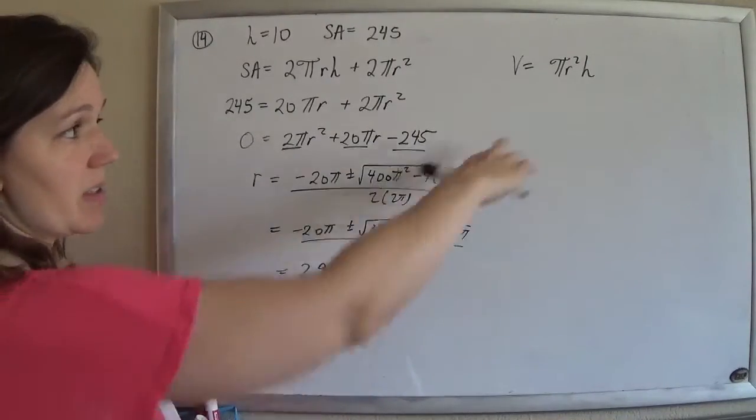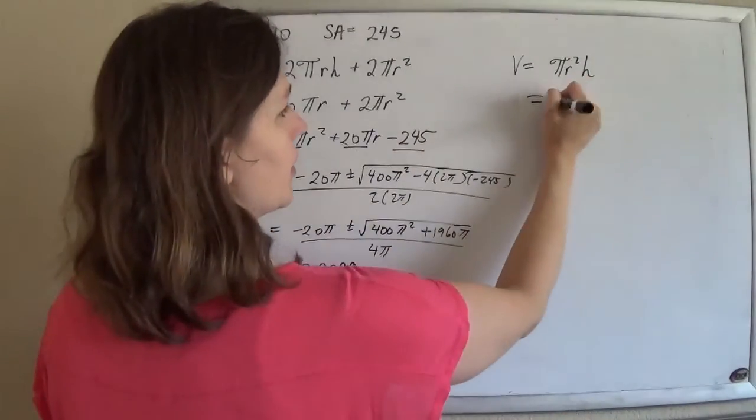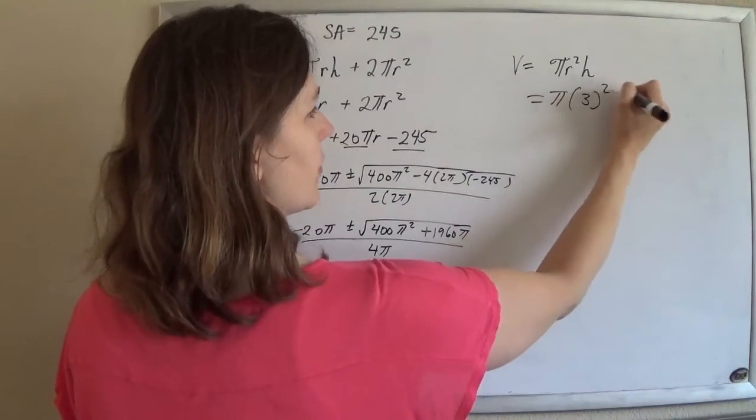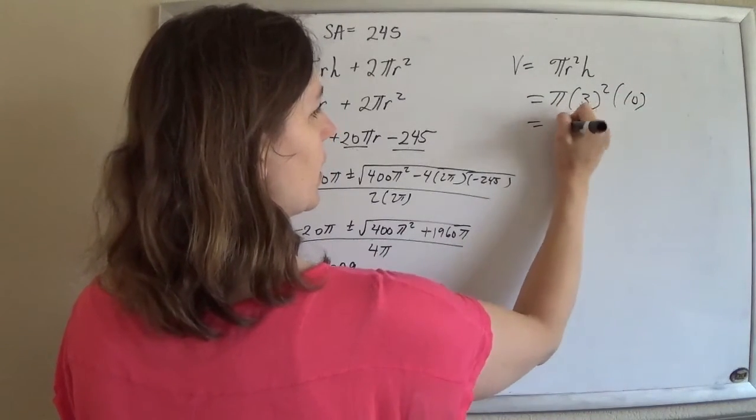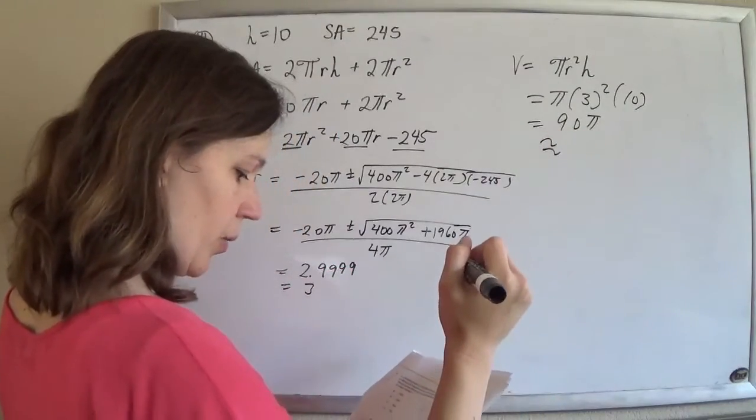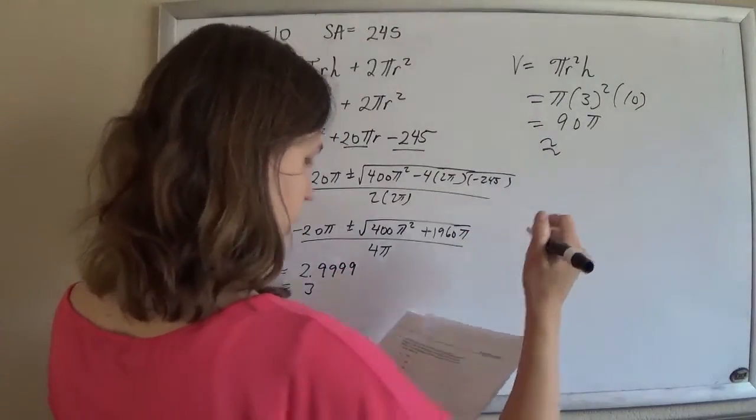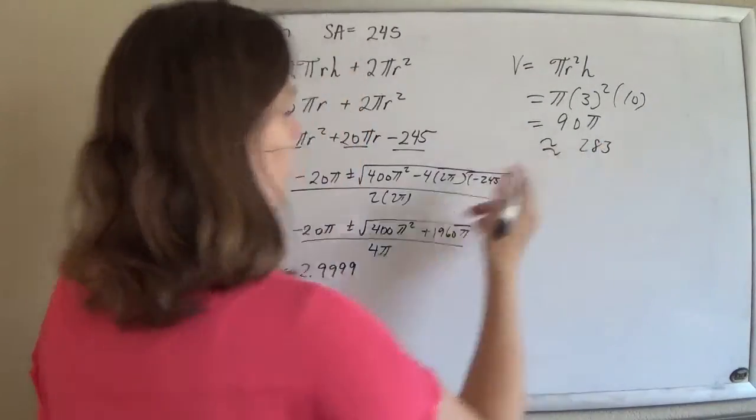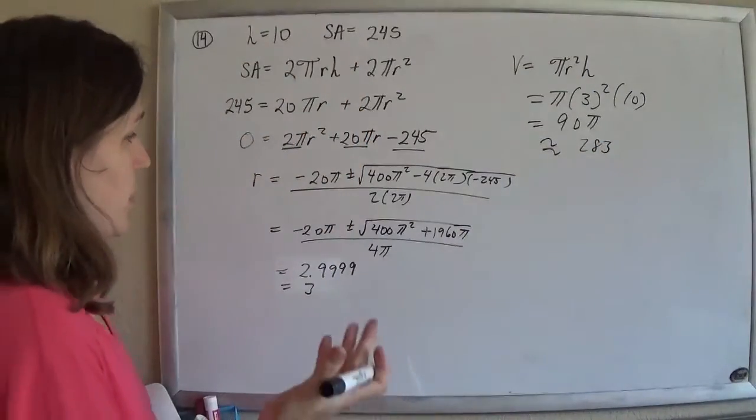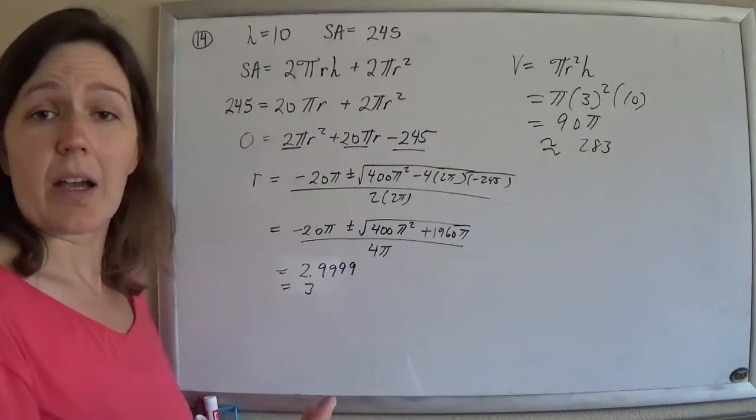And once you know that the radius is 3, you can pop that in to your volume equation, which is what they wanted. So the volume is 90 pi, and you pop that in on your calculator, and 90 pi is approximately 283. So I would do it that way. It's precise, you know it, you've got a calculator, might as well.